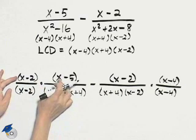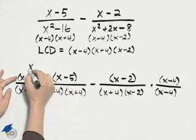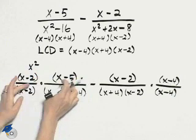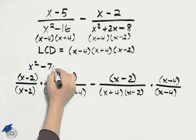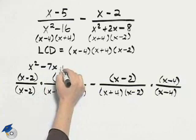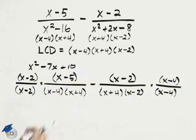So I'll write, using the distributive property, x squared minus 5x minus 2x, which is minus 7x plus 10. That, of course, is this multiplied.